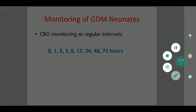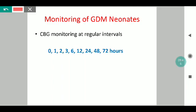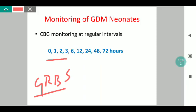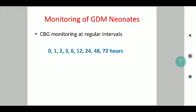When these children are born, because of fetal hyperinsulinemia they are at risk for hypoglycemia. As a result, CBG or GRBS monitoring is to be done at regular intervals — at birth, followed by 1 hour, 2nd hourly, at the 3rd hour, then at 6, 12, 24, 48, and 72 hours of life. At any time the glucose is found below the operational threshold, correction is to be initiated.